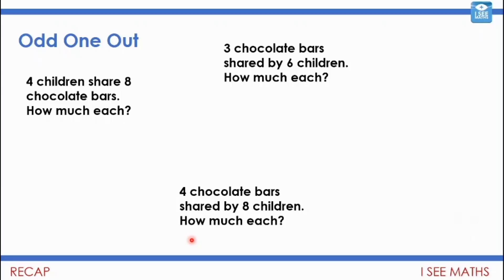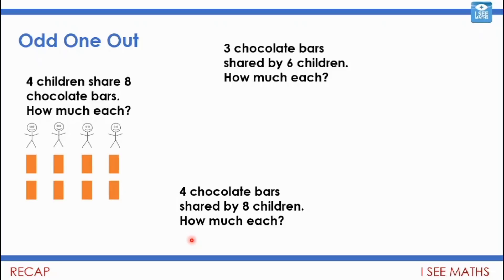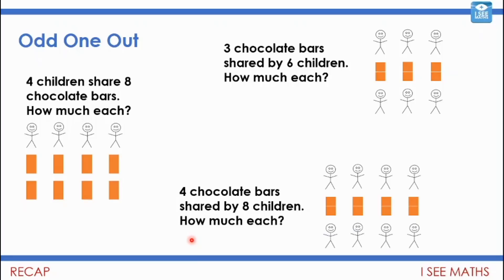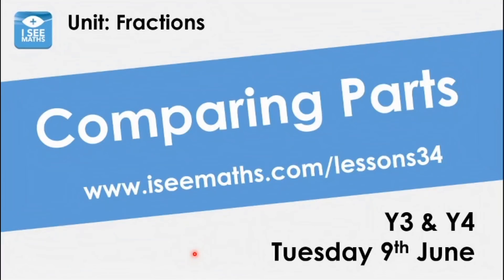I've tried to put a little picture to this. Four children share eight chocolate bars — there are the four children and the eight chocolate bars — they have two chocolate bars each. Three chocolate bars shared by six children — they would have half a chocolate bar each. Four chocolate bars shared by eight children — again, they would have half each. So the odd one out is the first example on the left. Today's video is called Comparing Parts — we're going to think deeply about different parts of different wholes and estimate how big one part is compared to another, really laying the foundation for fractions.